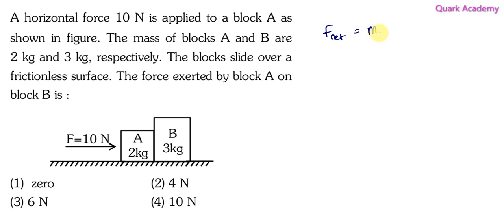F_net equals net mass times acceleration. So here net force is 10 Newton, which is the external force. Net mass is 2 plus 3 kg, so I just add them and I am treating them as a single one. And here acceleration, so the acceleration will become 10 by 5, that is 2 meter per second squared.